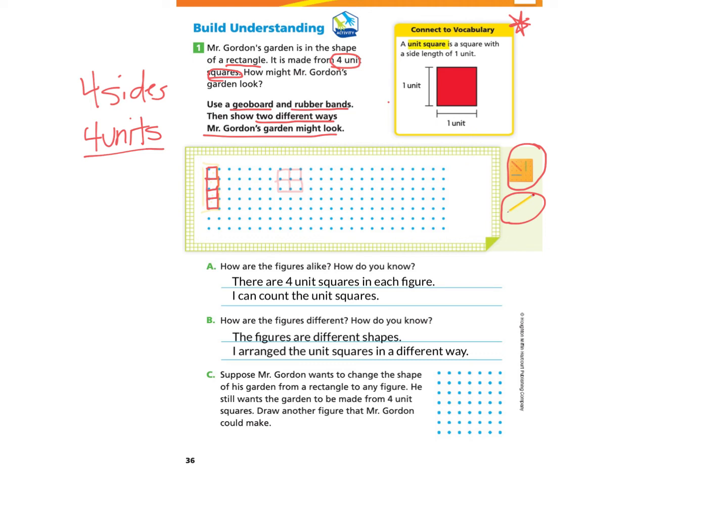Let's look at question C and underline or highlight the important information. Suppose Mr. Gordon wants to change the shape of his garden from a rectangle to any figure. He still wants the garden to be made from four unit squares. Draw another figure that Mr. Gordon could make. You can pause the video and give this a try or stay and follow along with me. We are being asked to still use four units, however it doesn't have to be a rectangle. So maybe I'm going to make this one here, this one here, this one here, and then instead of making a rectangle, I'm going to add another unit over to the right. So it kind of looks like an L shape. Feel free to create your own figure.